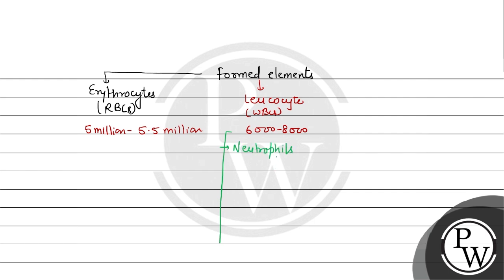Neutrophils are 60 to 65% of total WBCs. If we talk about basophils, which is the least abundant WBCs, that is around 0.5 to 1%. If we talk about eosinophils, they are 2 to 3%.